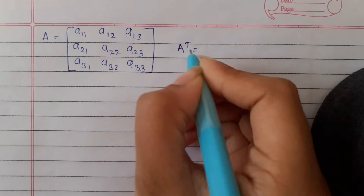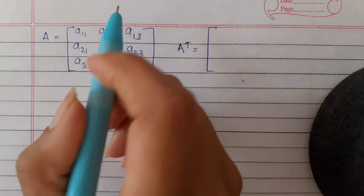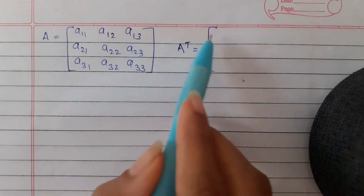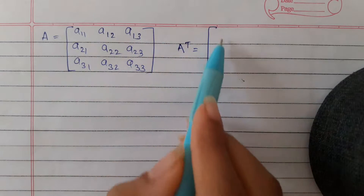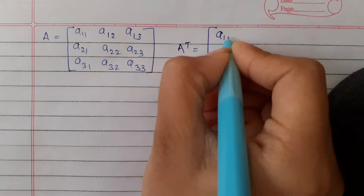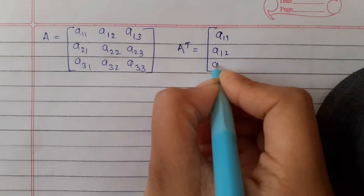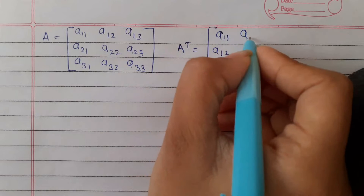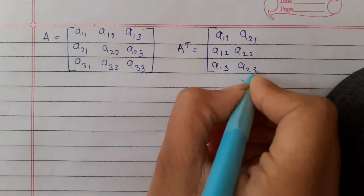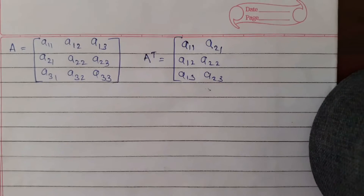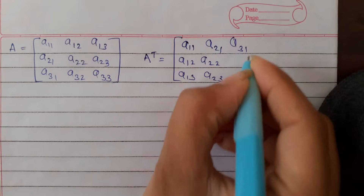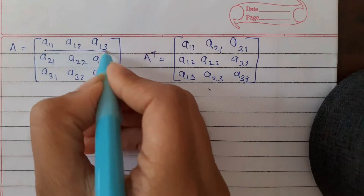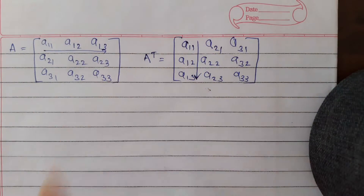Let us find the transpose of A. The transpose means shifting the rows into columns. So this first row we will write in column form, giving A11, A12, A13. Similarly, the second row written as a column gives A21, A22, A23, and the third row gives A31, A32, A33. This makes the transpose of A.